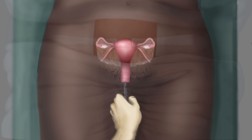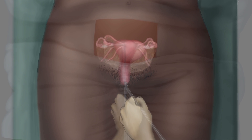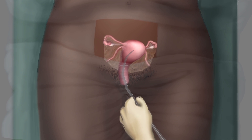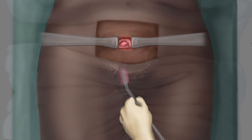Gently rotate the uterine elevator along its axis in order to bring the right or left corneum of the uterus and fallopian tube under the incision site.